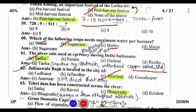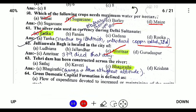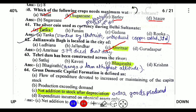Next, Tehri Dam is located on the river Bhagirathi and it is one of the biggest dams in India.